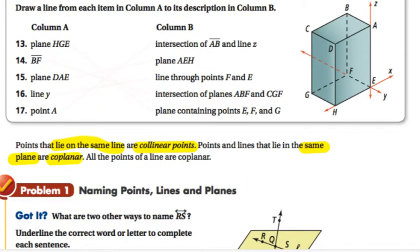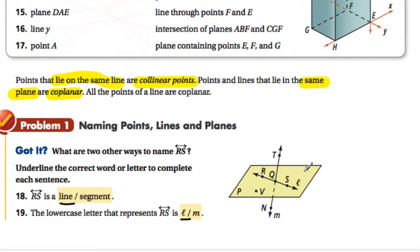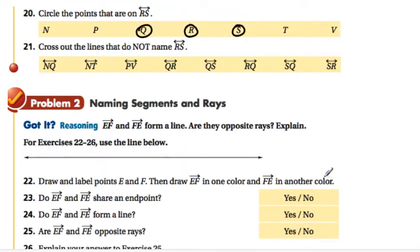Cross out the lines that do not name RS. Well, again, looking at RS, the ones that do not name RS are going to be all the ones except for R, Q, and S. So the lines that do not name RS, we're going to cross this one, we're going to cross NT, we're going to cross PV. Now, Q and R are on there, Q and S are on there, R and Q, S and Q, and those could all label the same line. Different ways of labeling the same line. So those are okay.